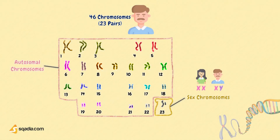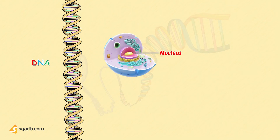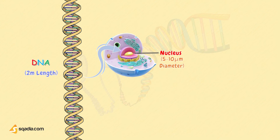Coming back to the topic — an interesting fact is that human DNA is a really, really long molecule, with an approximate length of about 2 metres. While the diameter of the nucleus of a cell is approximately 5 to 10 microns. Can you imagine how such a long molecule fits within such a tiny space within a cell, untangled, so that it allows easy access to the library of genetic information that it contains? How fascinating!